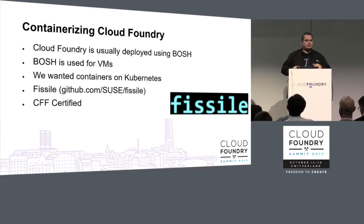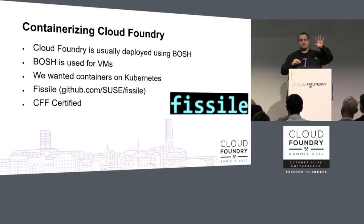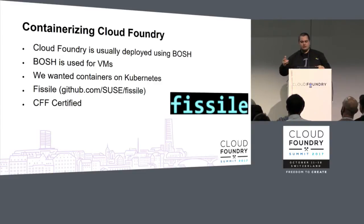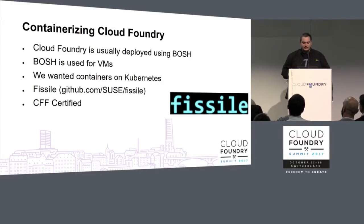We use all that release information — the spec for the packages, for the jobs, how you compile things — to create the container images. We actually build the stem cell just like you build a normal BOSH stem cell. At some point during the BOSH stem cell VM creation process there's a split: on one side you convert the OS image into a BOSH stem cell specific to the CPI you're going to use — Azure, AWS, and so on. For us, on the other hand, we turn that OS image into a Docker image, and that's the basis for all of the containers that make up our cloud application platform. We essentially just skip the CPI parts that turn each BOSH stem cell into an IaaS-specific VM image.